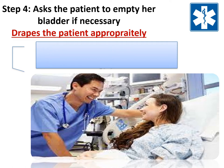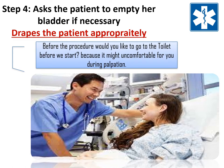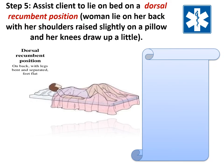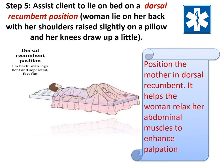Next step: assist the patient to lie on the bed in the dorsal recumbent position — the woman lies on her back with her shoulders raised slightly on a pillow and her knees bent up a little. Next, expose the part to be examined, keeping a cover on the other parts. Always remember: positioning the mother in the dorsal recumbent position helps her relax her abdominal muscles to enhance palpation.